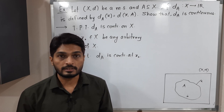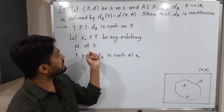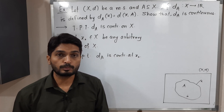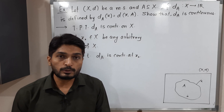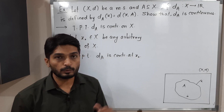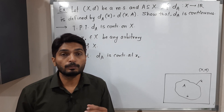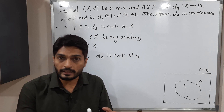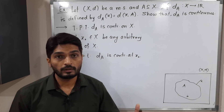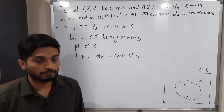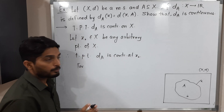We have to prove d_A is continuous at each and every point of the metric space (X, d). We have chosen one arbitrary point x₀, and our target is to prove it is continuous at x₀. We are going to use the epsilon-delta definition of continuity. But before that, it is very important to prove one inequality, and then we will go for the actual proof using the epsilon-delta definition.